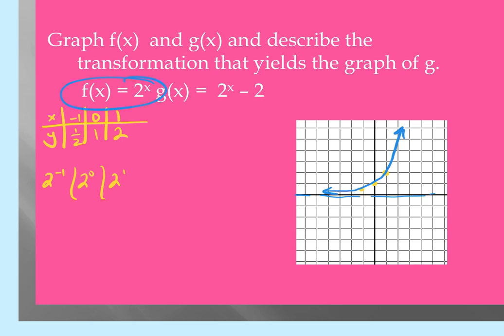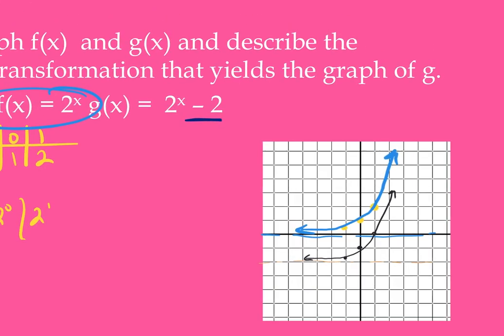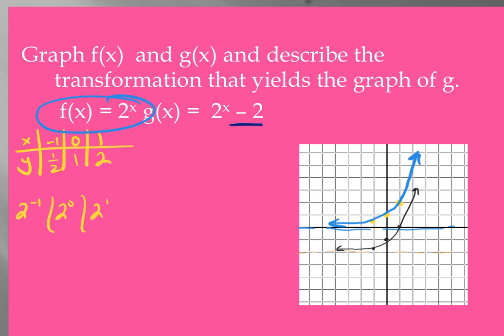As a reminder, you can use a t-chart for each graph or use transformations from the parent function. For a quiz, if there's one question use the t-chart; if using transformations, set up the parent and apply the shift. The quiz will ask for horizontal asymptote, y-intercept, domain, and range. Tonight's homework is on the website — some are multiple choice, but graphs must be drawn by hand as required for the quiz.